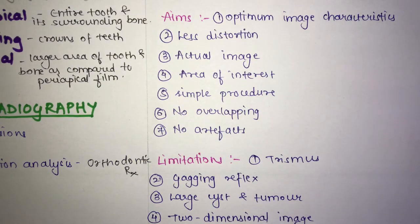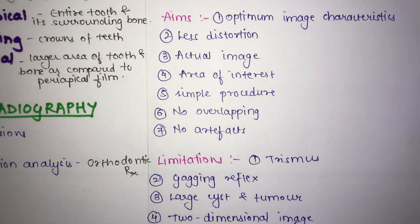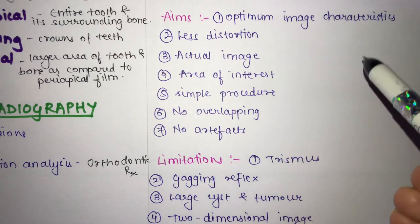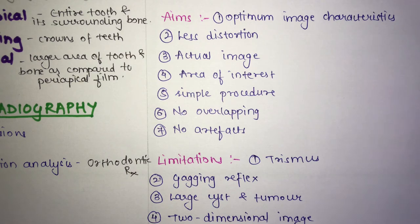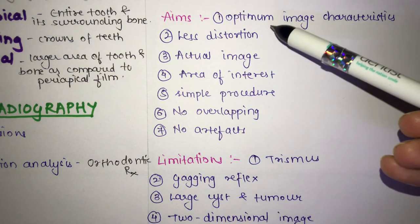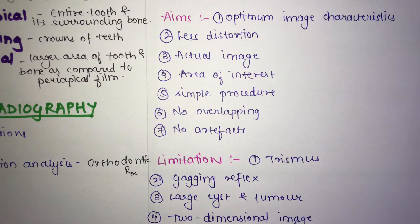The aims of periapical radiography are as follows. First, optimal image characteristics — the image must show optimum density, contrast, definition, and detail. Second, less distortion — the image must show minimal distortion, as most distortion is caused by improper angulation of the x-ray beam.